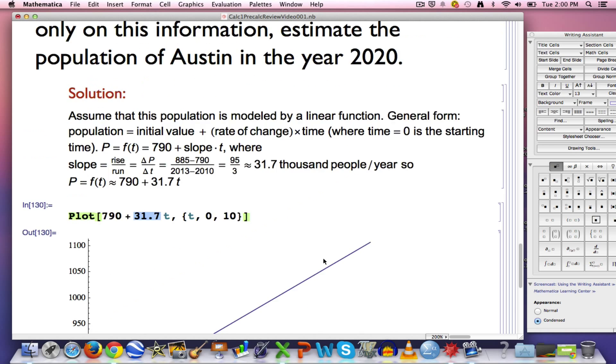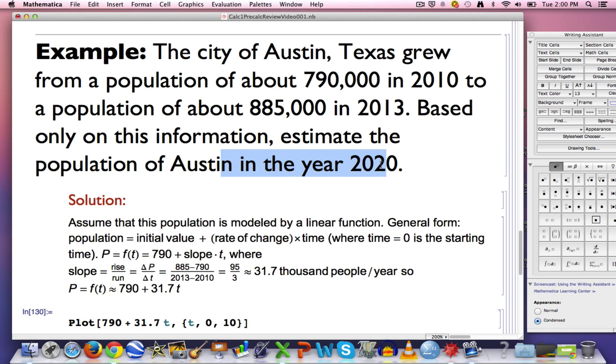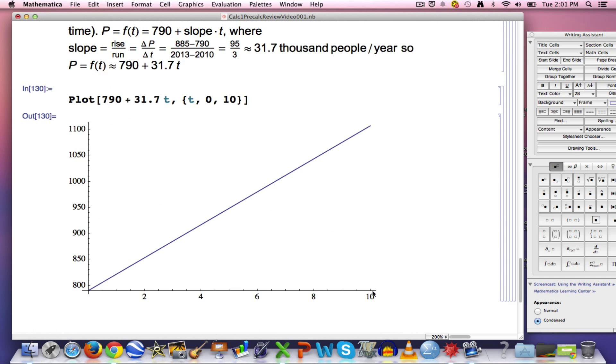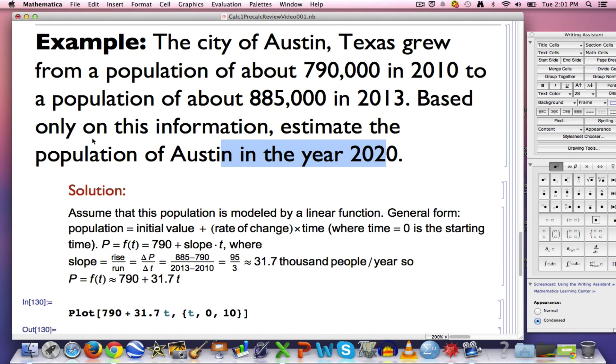What's the estimate for the population in the year 2020? That's the final thing we are after here. It would be the value of this function at T equals 10 because T is time since the year 2010. So this is going to give us the population in the year 2020. That's our goal. Go up to the graph, it looks like the population is going to be around 1,100,000, which would be the same as 1.1 million. Is that going to be accurate? Not necessarily, probably not in fact, but that's our initial model of the situation, our initial first guess as to the population of Austin in the year 2020.